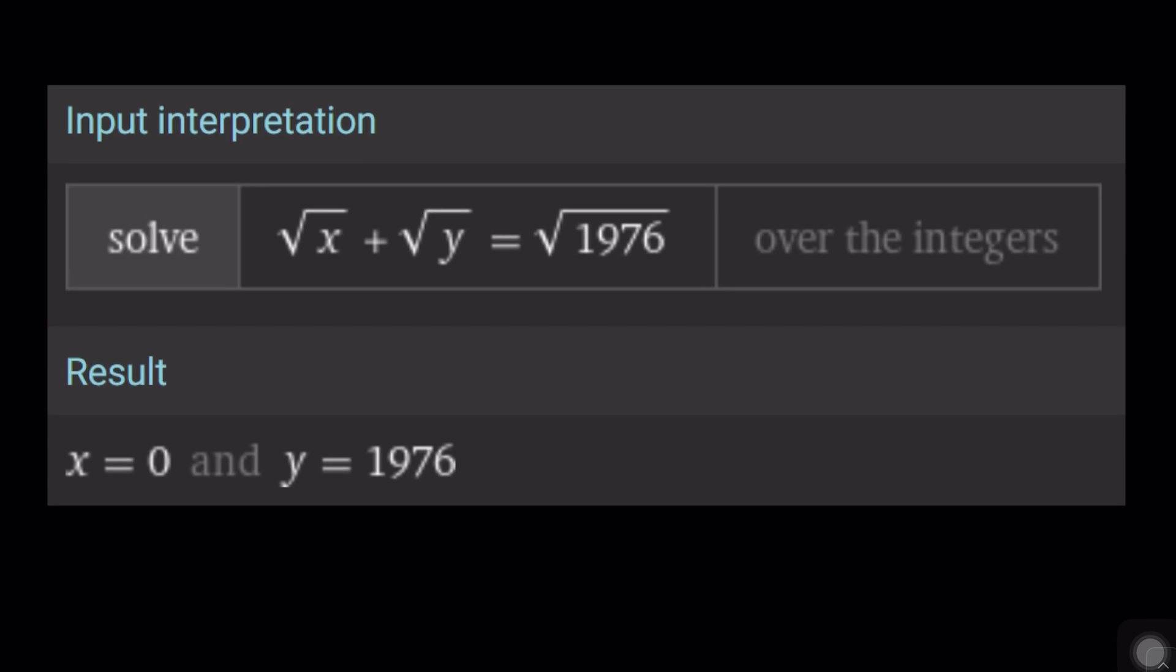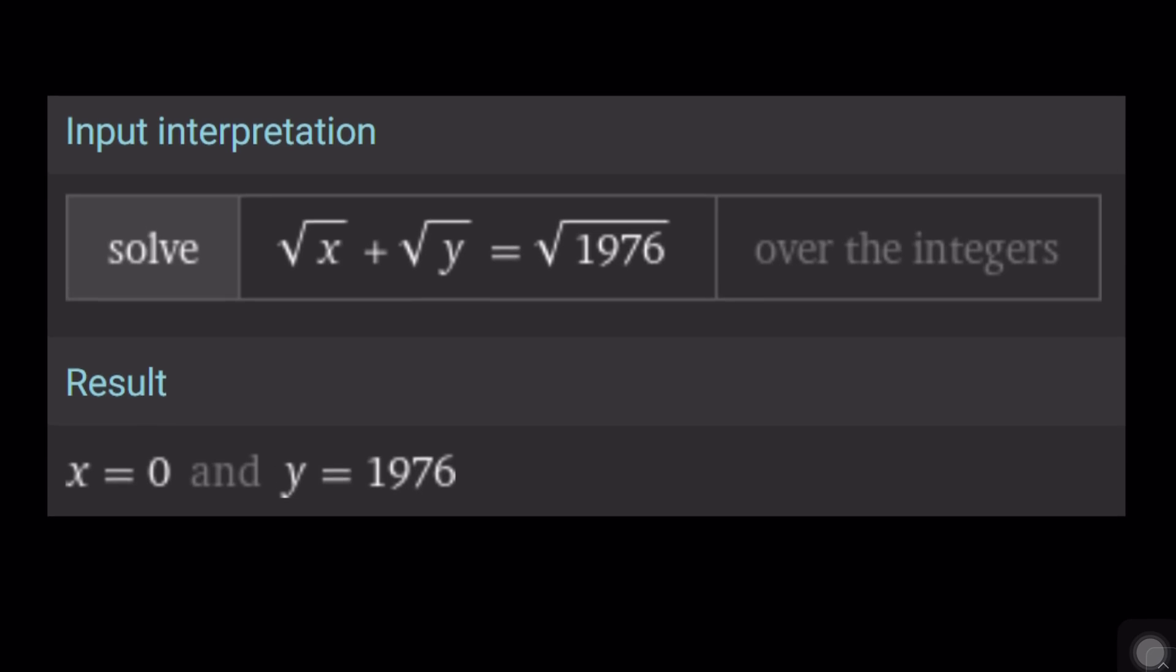Over the integers. Look at that. I didn't say positive integers so my prompt cannot be blamed for this. Unfortunately Wolfram Alpha can only find 0 and 1970. I don't know why it can't find 494. Or did we make a mistake? Let us know in the comment section.